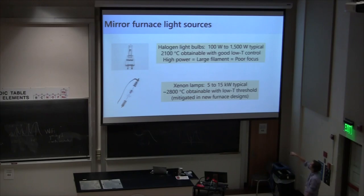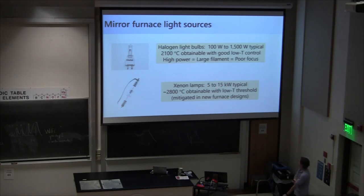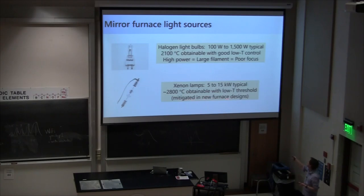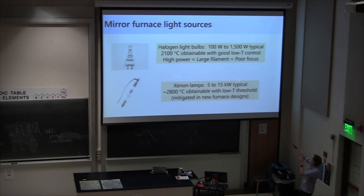If you switch to xenon lamps, you get much higher power — from 5 to 15 kilowatt bulbs, like movie projector bulbs. With these you can typically reach temperatures up to about 2,800°C. The typical trade-off is that the low-temperature threshold — basically the low power control — is rather poor for lower temperatures. This can be mitigated with new furnace designs from Scientific Instruments of Dresden, where you use a shutter system to leave the xenon lamp on at some above-threshold power but simply mask the light down.